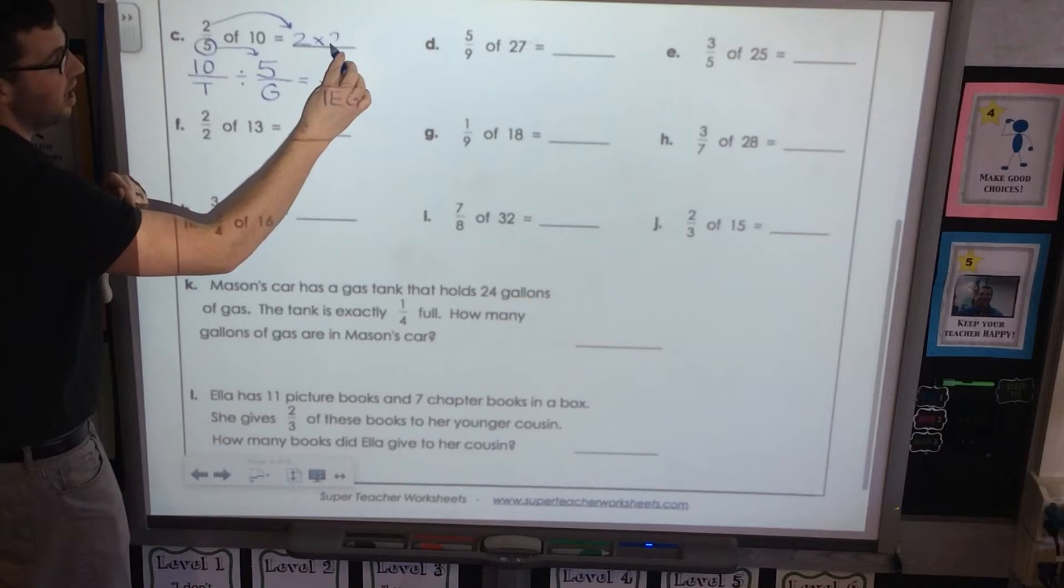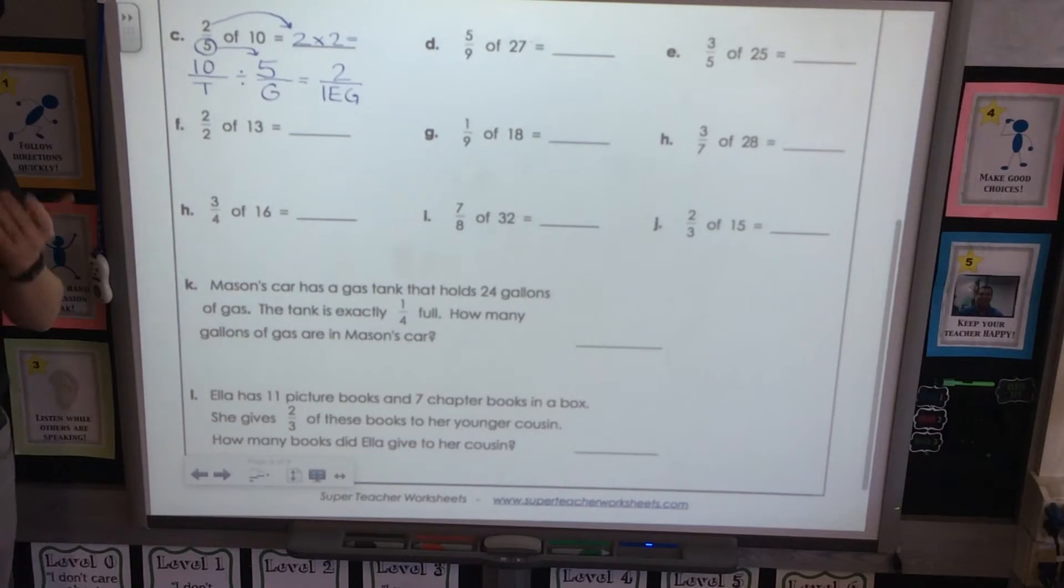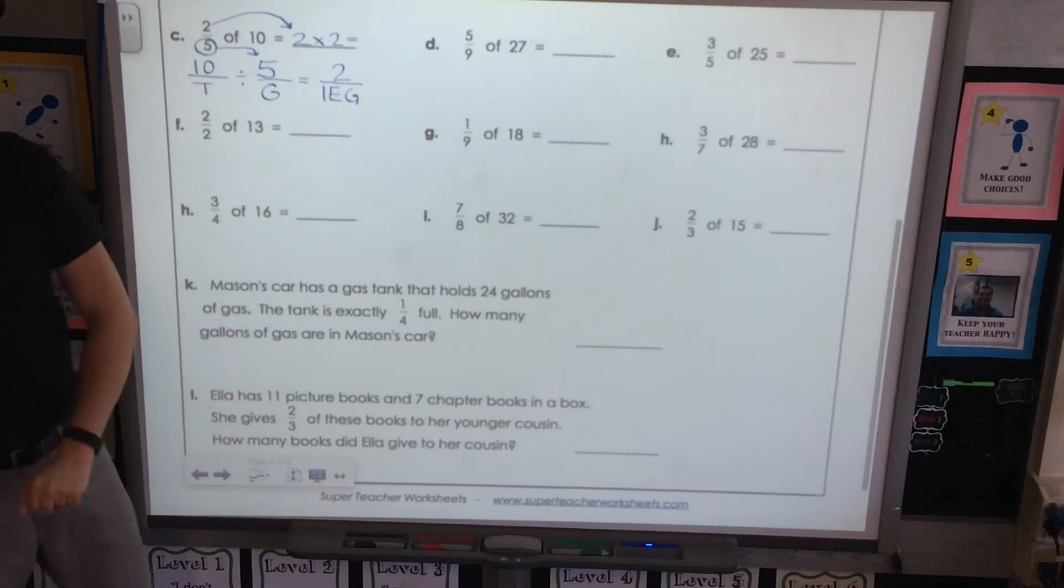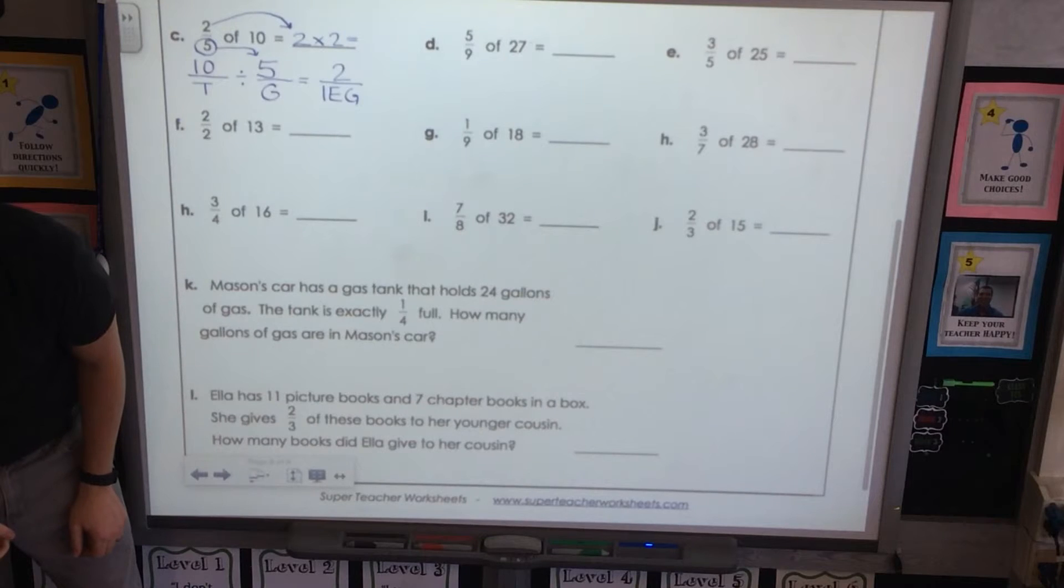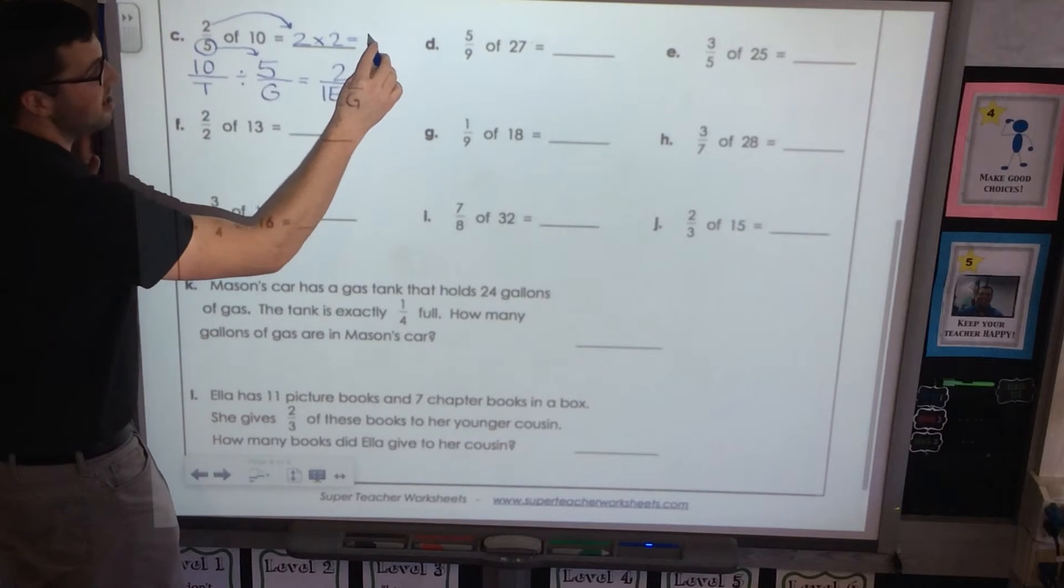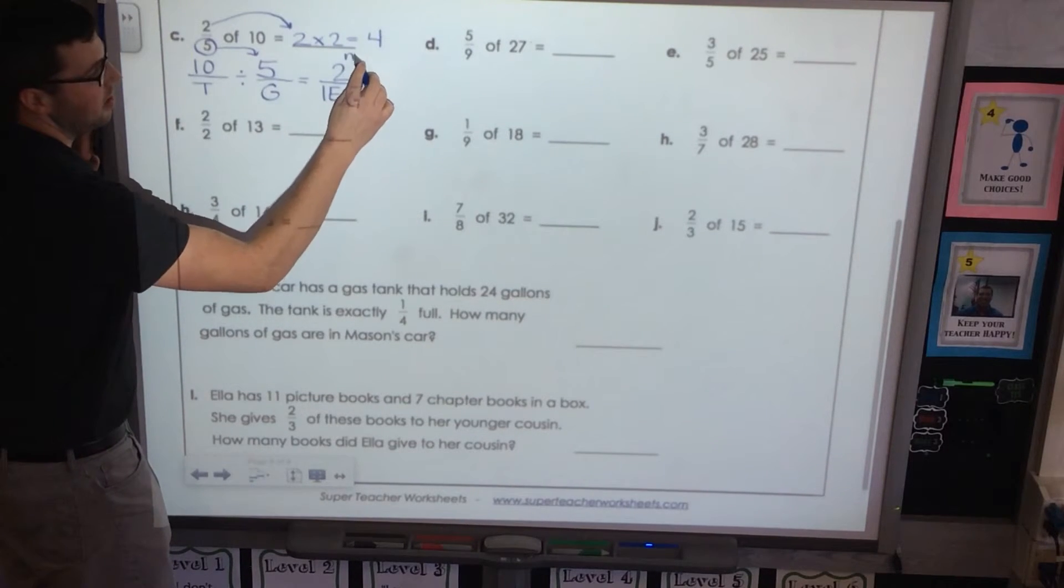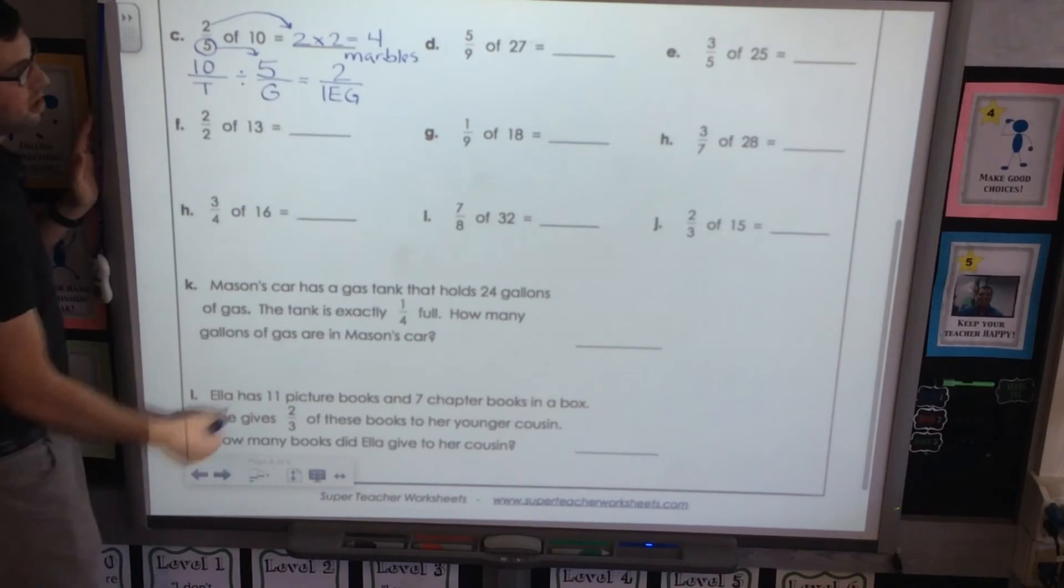Two groups of this equals how many marbles? And just visualize it. One group is two marbles, so two groups is? Four. Luke. How many marbles? Four. Four marbles. So we're going to write four. And I can only fit it down below. Four marbles.